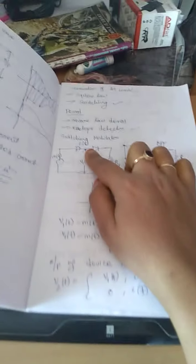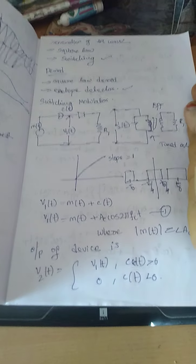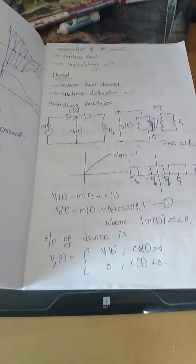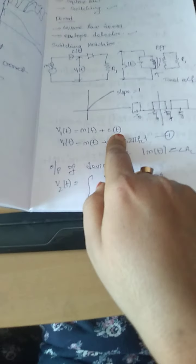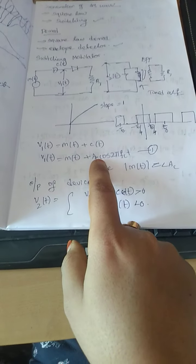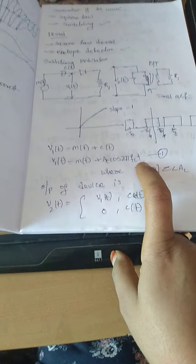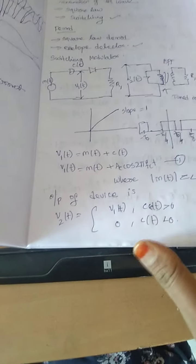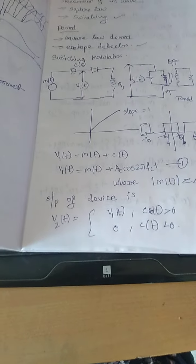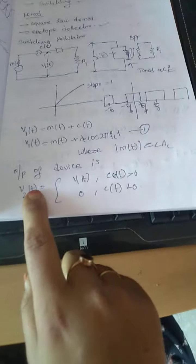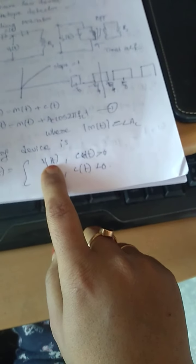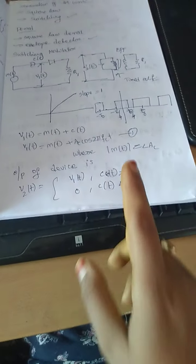We are assuming that c(t) applied to the diode is of large amplitude. In that case, v1(t) = m(t) + c(t), that is message plus carrier. So v1(t) = m(t) + Ac·cos(2π·fc·t), where |m(t)| is always less than the carrier. The output of the device is v2(t) = v1(t) when the carrier signal is greater than 0, and 0 when it is less than 0. So the carrier should always be high.